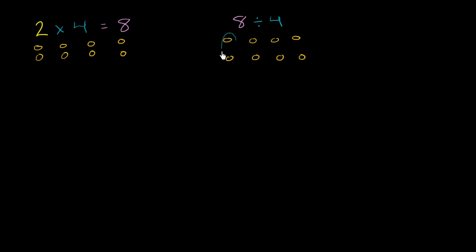Well, that's 1 equal group, 2 equal groups, 3 equal groups, and 4 equal groups. And we see when we start with 8 divided into 4 equal groups, each group is going to have 2 objects in it.